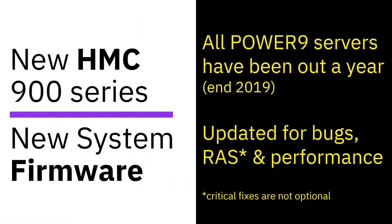All of the Power9 servers have been out for a year now. At the end of 2019, some of them have been out 18 months. What I want to encourage you to do is look at your HMC versions and your system firmware versions and make sure you've updated those fairly recently. This will remove bugs in your systems — you don't want to hit a bug that IBM hit a year ago — increase your reliability, and actually increase your performance as well. There are some critical fixes. These are not optional. When we say critical, these are, for example, something where we can detect corruption in memory. At that point, we must not let you write that piece of memory back into your database — otherwise you end up with a corrupted database — and the only safe thing to do is to halt the LPAR, or indeed the entire machine, to stop that problem getting worse.